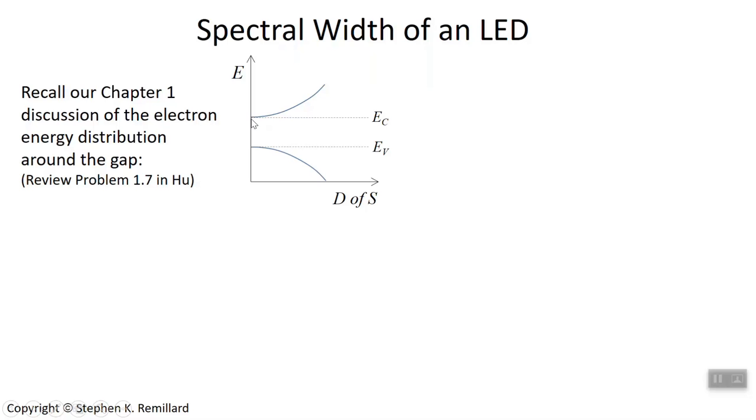The density of states just tells you the number of states available at a given energy. Something that's worth pausing for a second and talking about on this graph is, I understand it can be difficult to read, because the ordinate and abscissa are switched. The independent variable is vertical, the dependent variable is horizontal. You just have to work with that because we like it that way, so that we can superimpose this function on top of the energy band diagram.